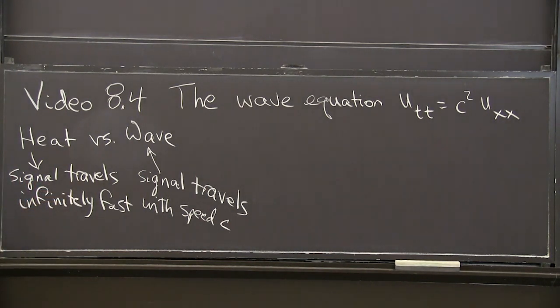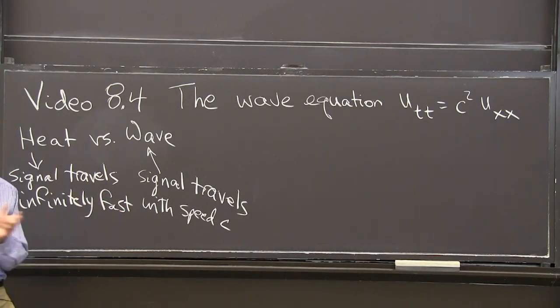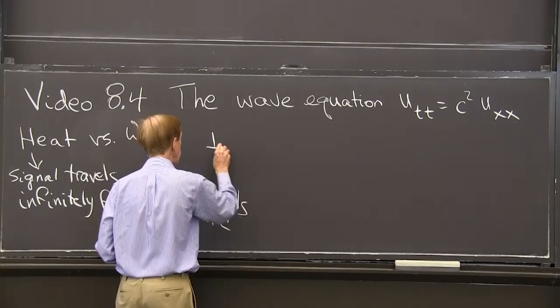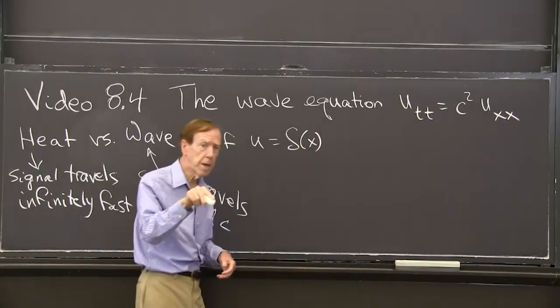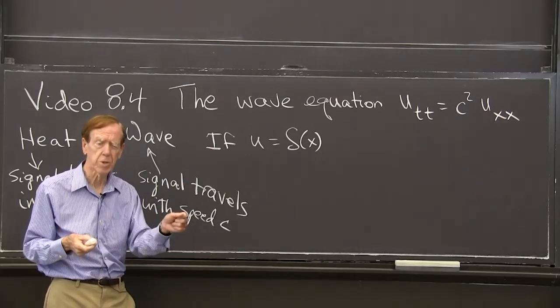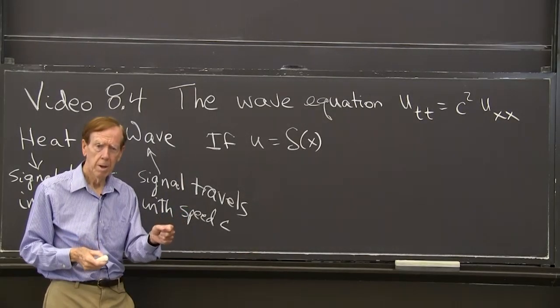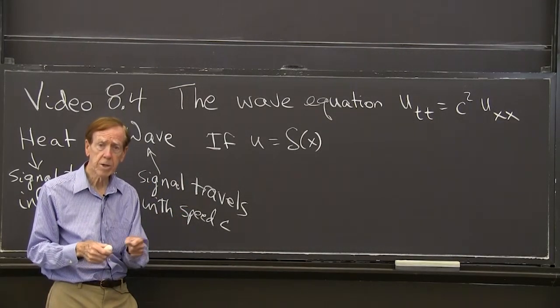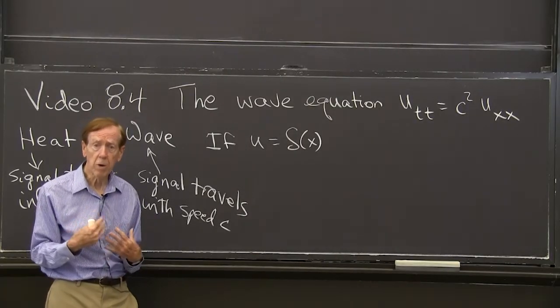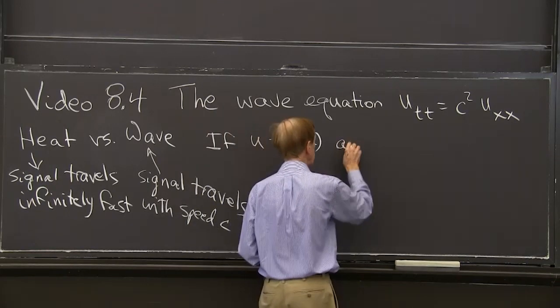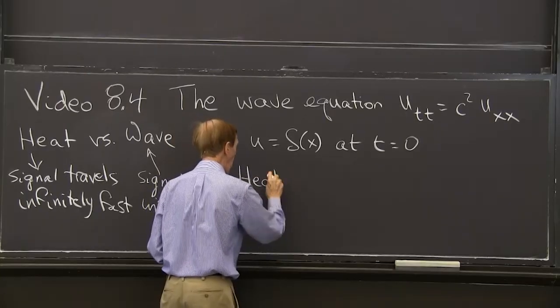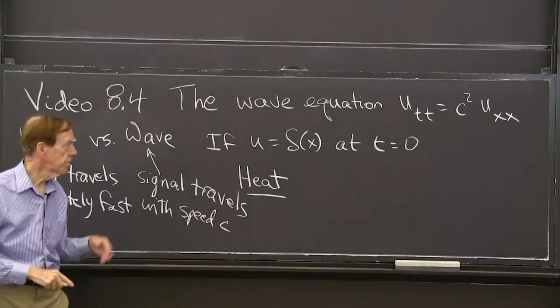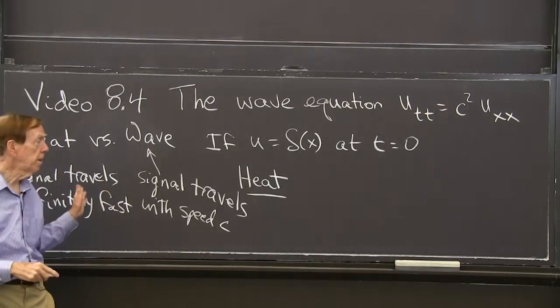Let me try to give an example. Suppose the initial condition is a delta function. If u equals a delta function, a point source, which is quite normal, a point source of heat, something really hot, or a point source of sound, my voice. So if that is at t equals 0, then for the heat equation, there's a famous solution.